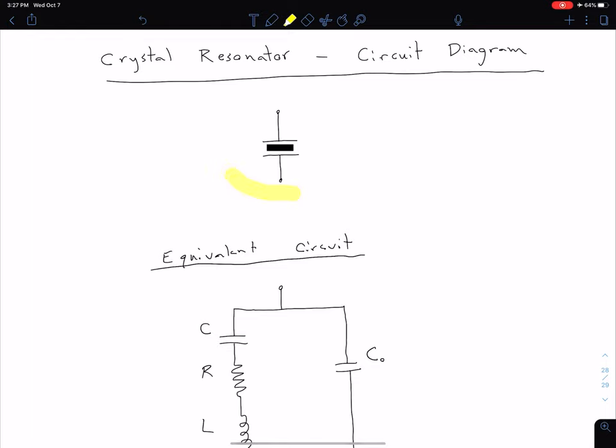So our top figure up here is actually our circuit diagram for our crystal resonator. That kind of makes sense if we think about the common structure we saw in the previous video, where we essentially had almost like a parallel plate capacitor with that quartz in between two electrodes. So our circuit diagram is just this sort of capacitor-looking symbol with a solid block in the middle of the plates.